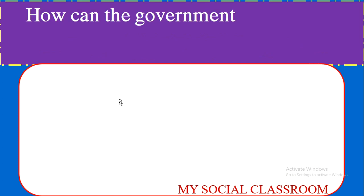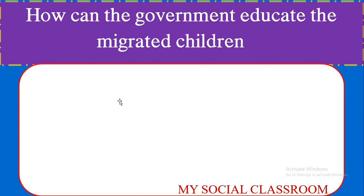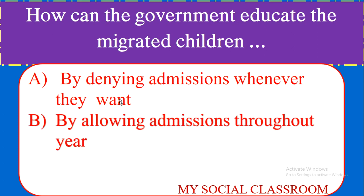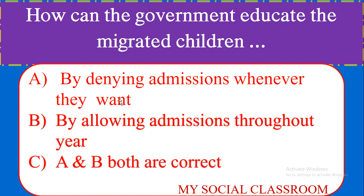How can the government educate migrated children? By denying admissions whenever they want, By allowing admissions throughout the year, A and B both are correct, Only B is true. Correct answer: Only B is true.